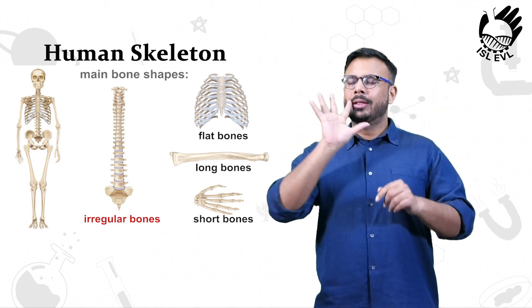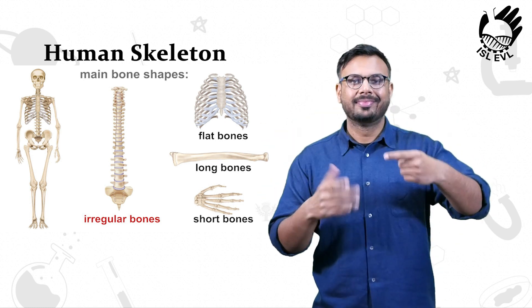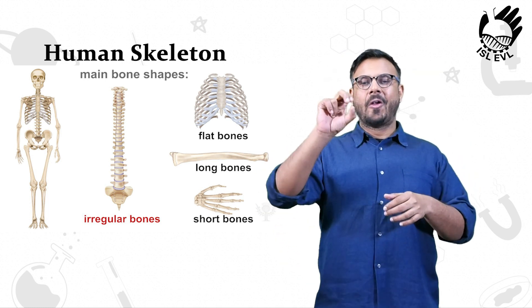I will now briefly talk about the main bone shapes in our skeletal system. First, we have the long bones, such as the thigh bone.